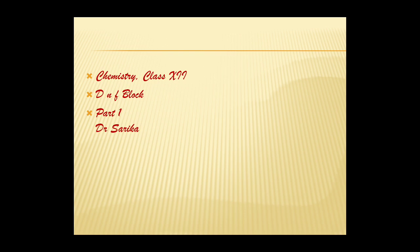Most other metals come in this group. Originally, the name transition metal was derived from the fact that their chemical properties were transitional between those of the S and P block elements. According to IUPAC, transition metals are defined as metals which have an incomplete D sub-shell either in the neutral atom or in their ions. Zinc, cadmium, and mercury of Group 12 have a full D10 configuration in their ground state as well as in their common oxidation state, so they are not classified as transition metals.